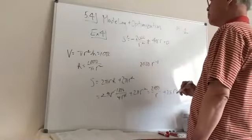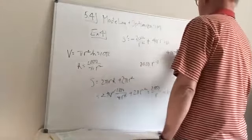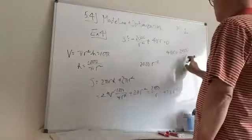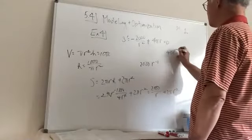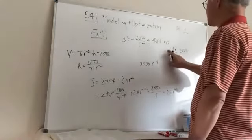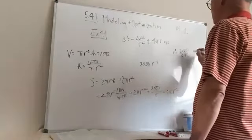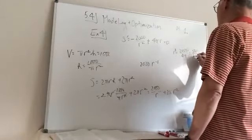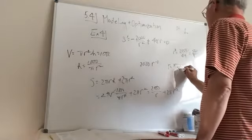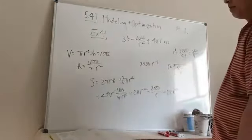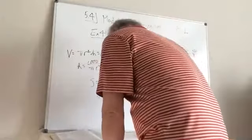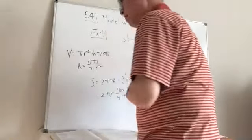Setting S′ = 0: 4πr = 2000/r², so r³ = 2000/(4π) = 500/π. Therefore r = ∛(500/π). That gives the optimal radius for the minimum surface area can.